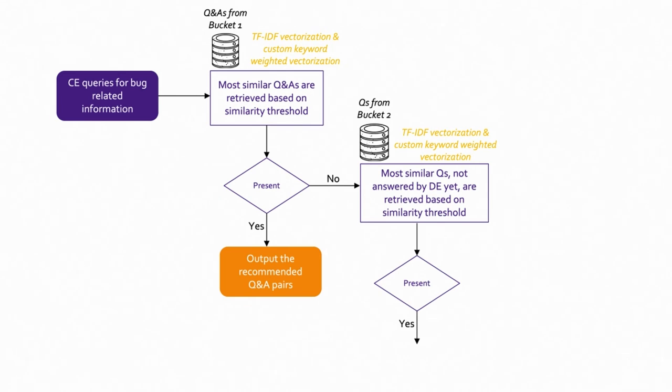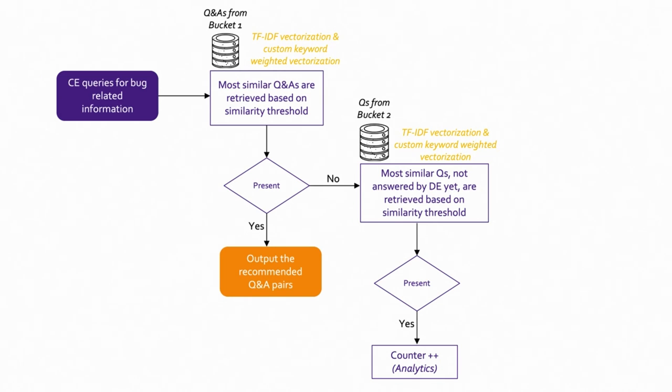The question hasn't been answered by the developer team, but consulting engineers keep asking it — which means it's a critical issue. The system uses analytics to recognize this, and Skybridge automatically triggers an email to the developer team to get it answered as soon as possible. Once answered, the response is stored back in the database so future queries will retrieve the answer immediately. That's the analytics component of Skybridge.